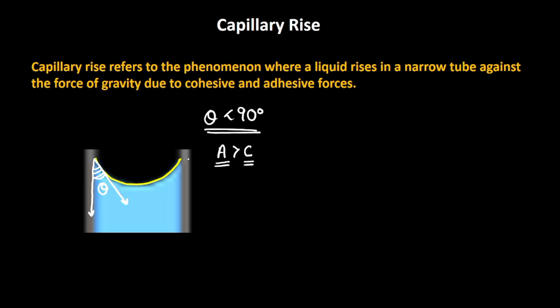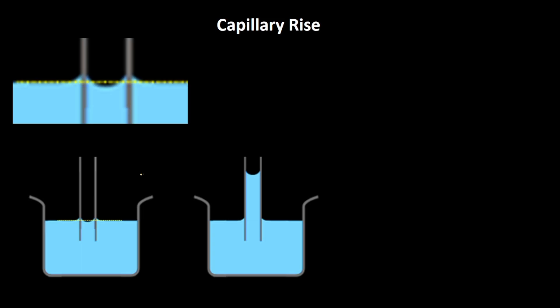This curvature that gets created is exactly the reason for capillary rise. Imagine that at t = 0, the water has not risen. The pressure at the lower points is greater than the pressure at this particular height. This excess pressure will force the water to go upwards, and this is exactly the reason for capillary rise.